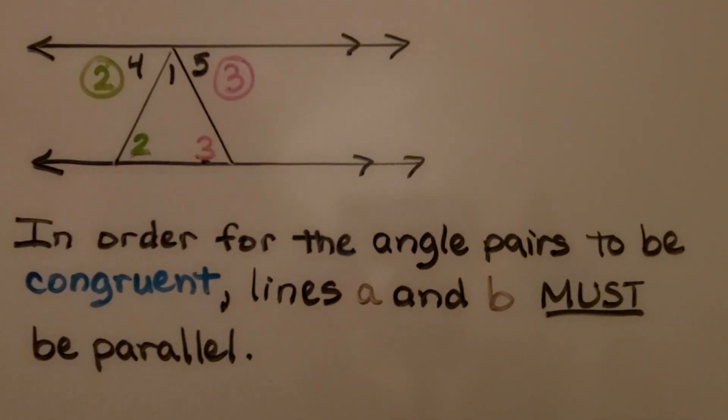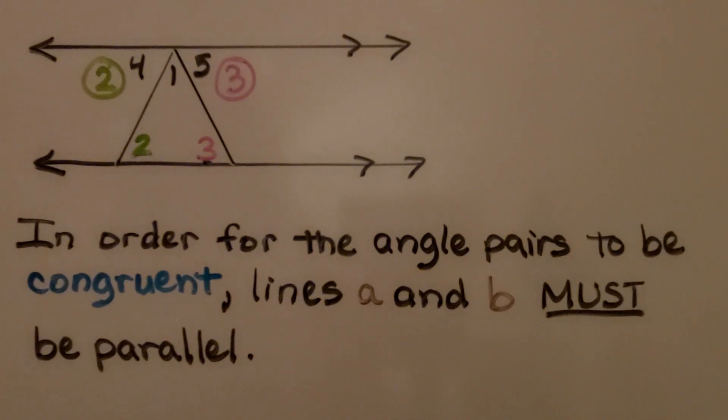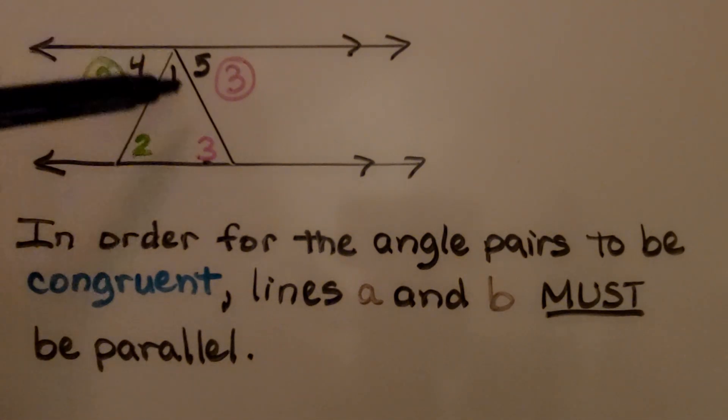In order for the angle pairs to be congruent, lines A and B must be parallel. If they weren't parallel, we wouldn't be able to use our alternate interior angles and the transversals.